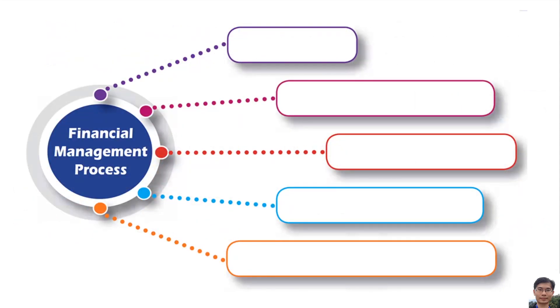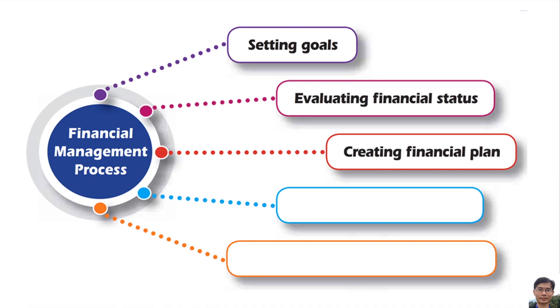The financial management process consists of setting goals, evaluating financial status, creating financial plans, carrying out financial plans, and reviewing and revising the progress.